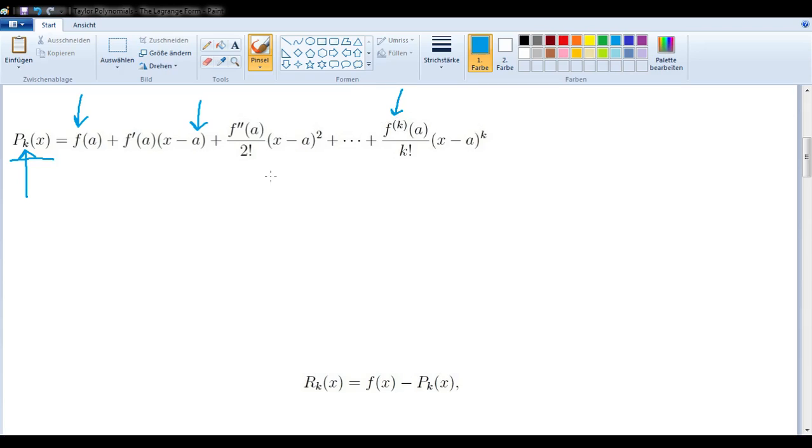Since we're using this p sub k to emulate the function f, it would be helpful to have a way of talking about how far apart the simulation is from the actual value. So if we compare f of x and p sub k of x, we get a value which we are calling r sub k of x for remainder.